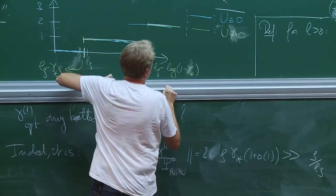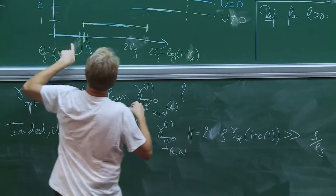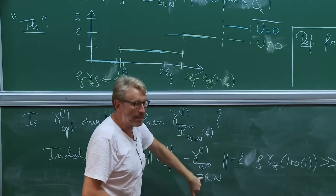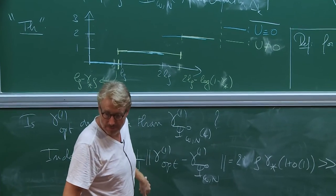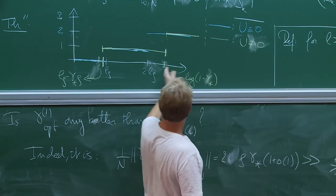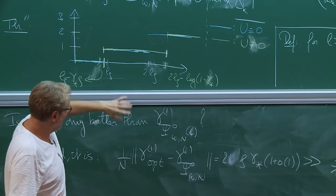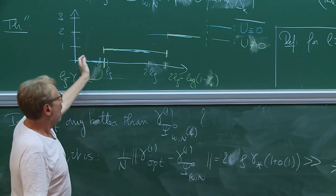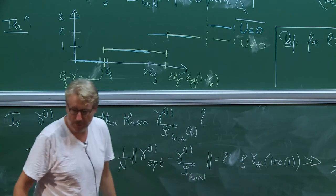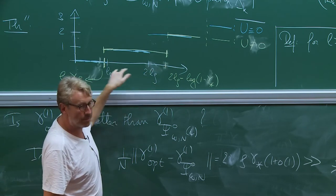Indeed it is. If you compare using the trace class norm per particle between gamma_1_opt and gamma_1 of psi_{0, omega, n, L}, this thing is of size n times rho times gamma_star times 2, times one plus little-o of one. In the case when u is exponentially decaying, this is much larger than rho divided by L_rho. Because L_rho is large, this is of size rho. So you really have measured something more precisely — you have constructed a better approximation than the trivial one which would be the free ground state.